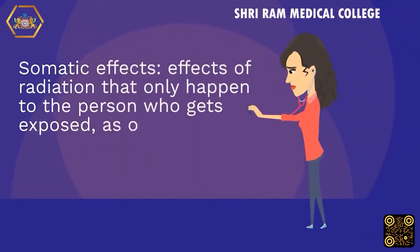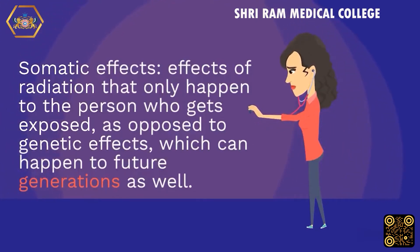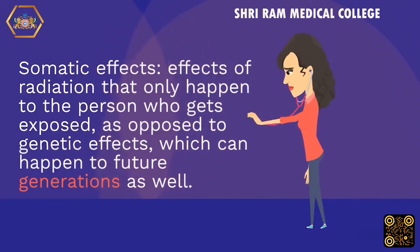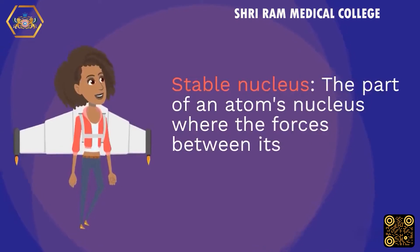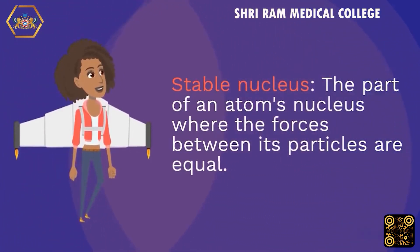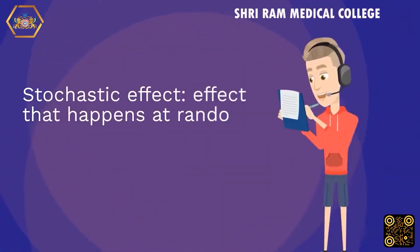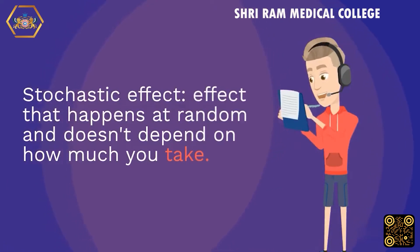Somatic effects: effects of radiation that only happen to the person who gets exposed, as opposed to genetic effects, which can happen to future generations as well. Stable nucleus: the part of an atom's nucleus where the forces between its particles are equal. Stochastic effect: an effect that happens at random and doesn't depend on how much dose you receive.